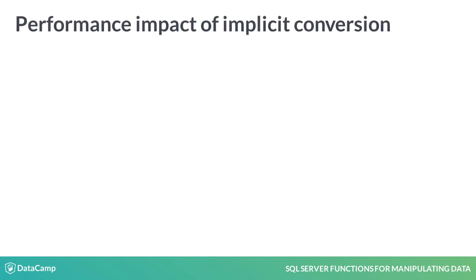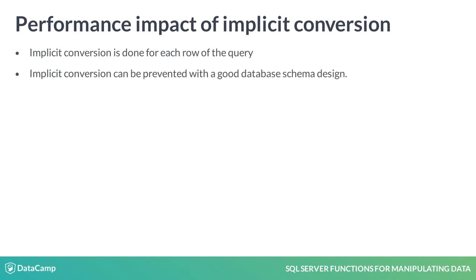Even if implicit conversion is a nice feature, you should be careful because it has an impact on query performance. You need to keep in mind that SQL Server performs the conversion for every single row of your query. Implicit conversions are easy to prevent when you have a good database schema design and developers follow good application coding techniques.